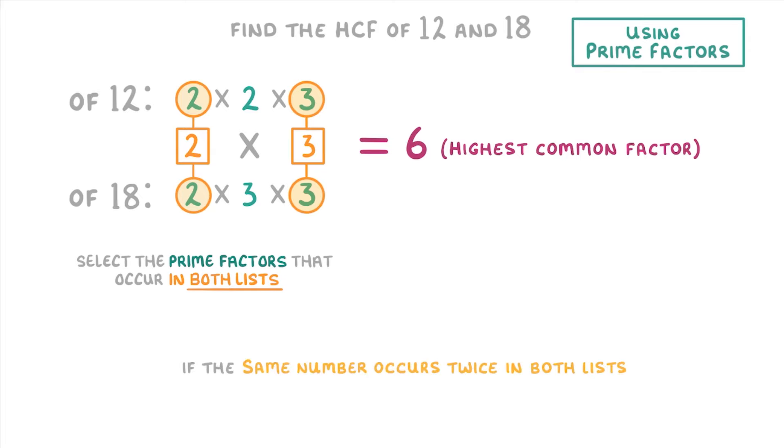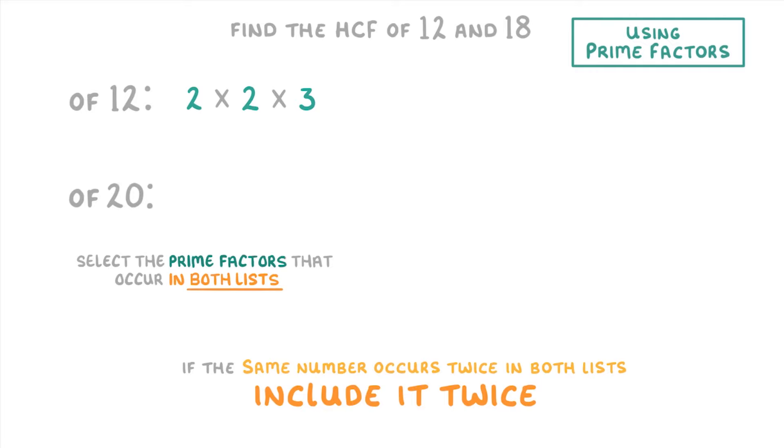Now, if the same number occurs twice in both lists, then we're going to have to include it twice. For example, let's change the 18 to a 20, which has the prime factors 2, 2, and 5.